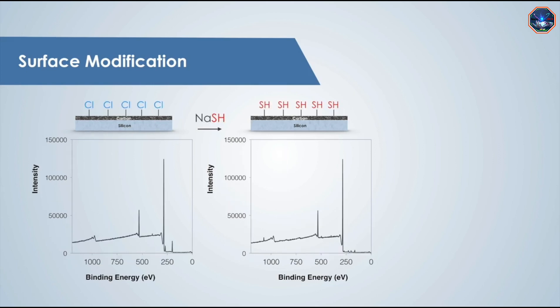The next step in this experiment is to react the chlorine terminated surface with sodium hydrosulfide in order to replace the chlorine atoms with sulfur atoms. Again, we see some changes in the spectra following the reaction.